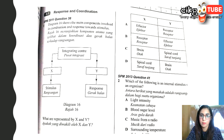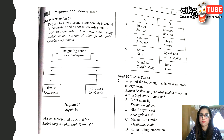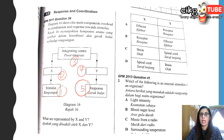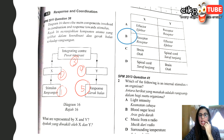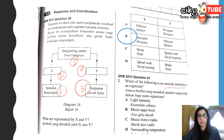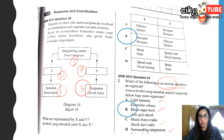Now let's look at some practice questions. A diagram shows the main components involved in coordination and response to a stimulus. X represents the receptor that detects the stimulus, and Y represents the effector that receives the information to produce a response. For the next question: which of the following is an internal stimulus of an organism — internal light, blood sugar level, music from a radio, or surrounding temperature? The answer is blood sugar level, because internal means whatever is inside your body.